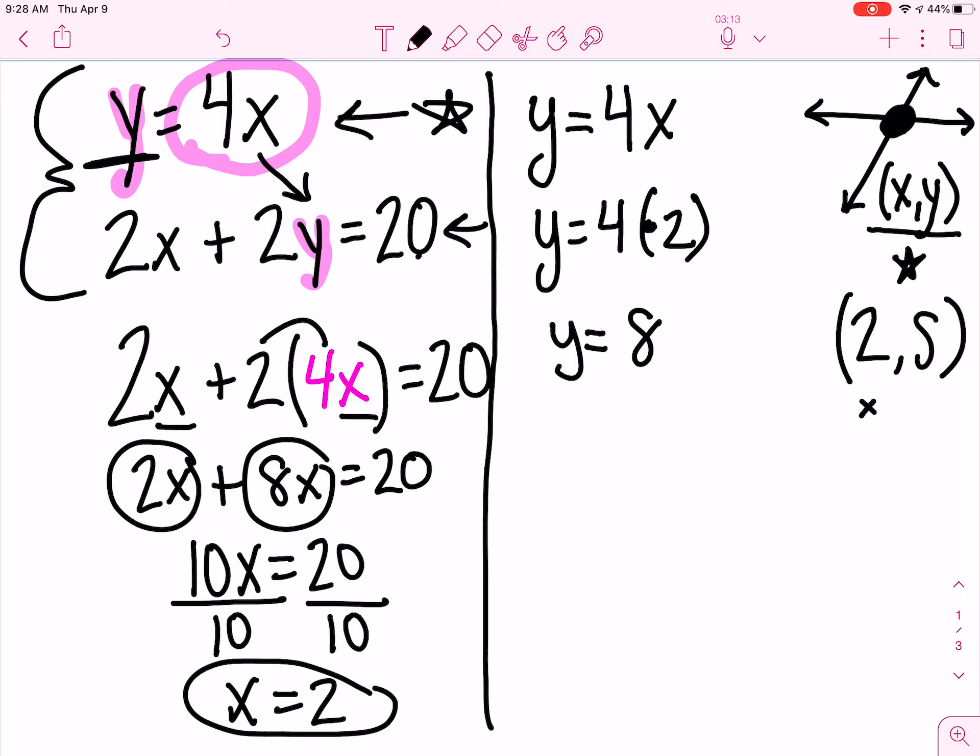So I found my coordinates. It is at 2 comma 8. That is where these two lines are going to cross. So our solution is 2 comma 8.